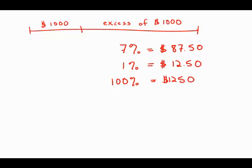So the excess above $1,000 is $1,250. That means we have to add the original $1,000. So that means that the total price is $2,250.